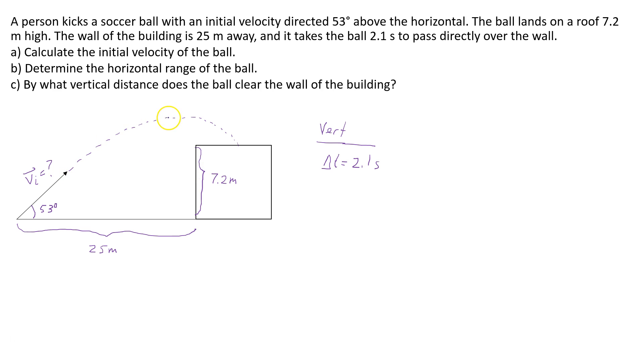In the vertical, we don't know much more. The only other thing we know is that the height of the building is 7.2 meters. But that won't really help us in finding the initial velocity of the ball. So now let's look at the horizontal plane.